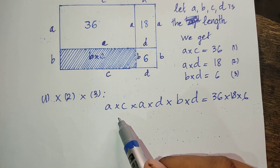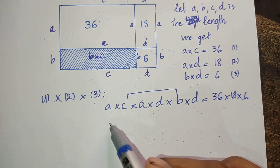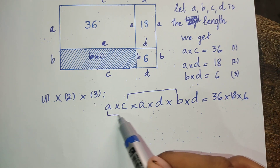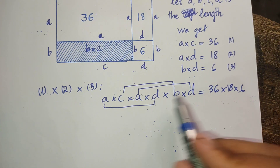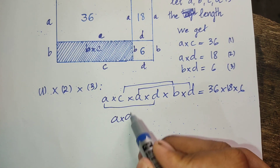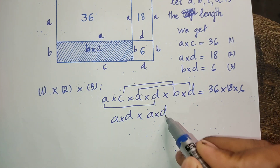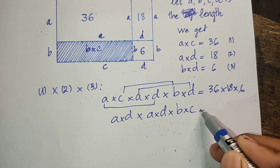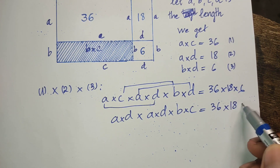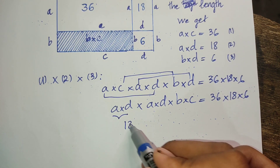So now we get B and C, and A and D. So now A multiplied by B multiplied by C equals 36 multiplied by 18 multiplied by 6. And this we replace by 18.